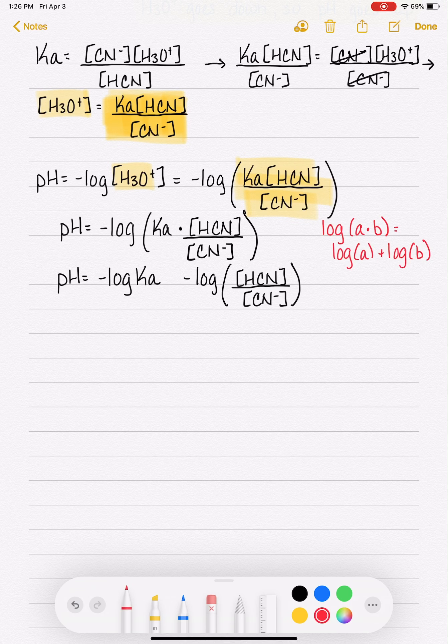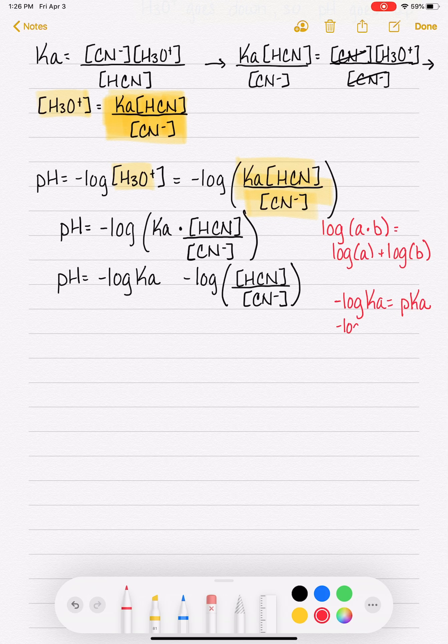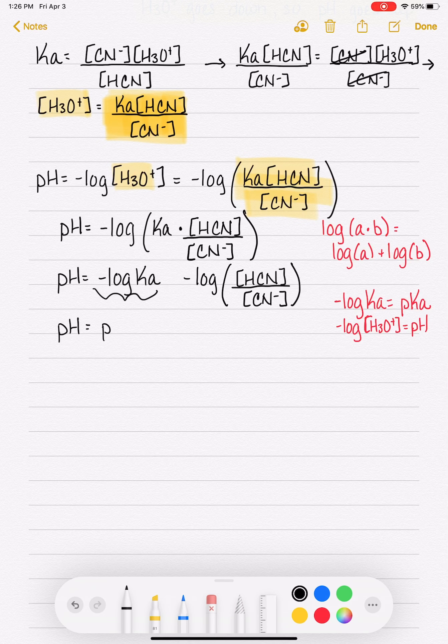Now I'm going to, we've done this once before, remind you that the negative log of Ka is referred to as pKa, just like the negative log of H3O plus is pH, or the negative log of OH minus is pOH. So that's just a definition that we have. So I'm going to rewrite this equation again using that definition. Instead of saying negative log of Ka, I'm going to say pKa minus the log of HCN over CN minus.